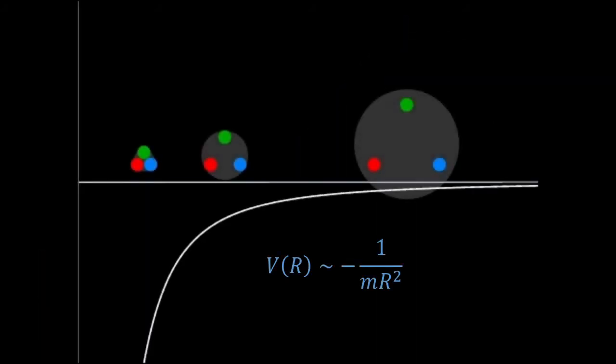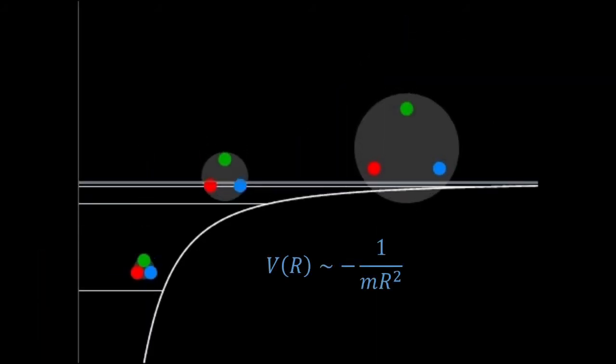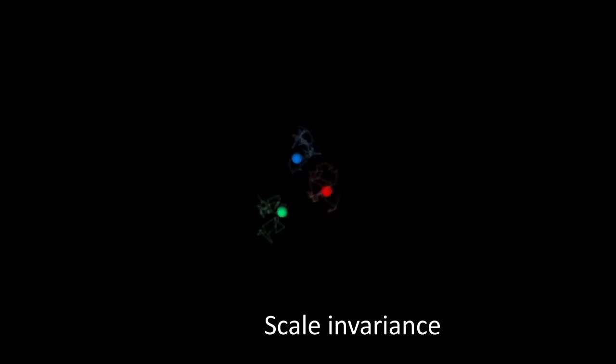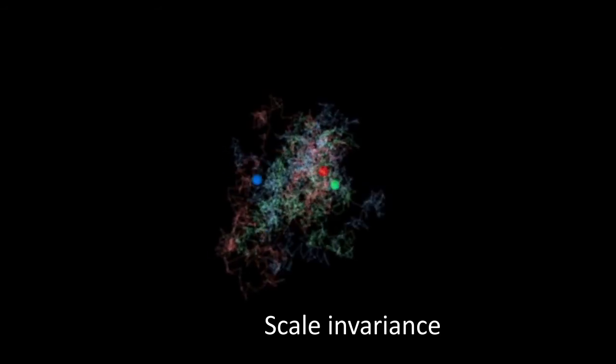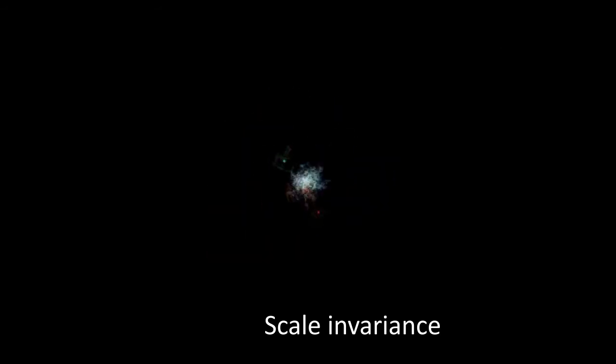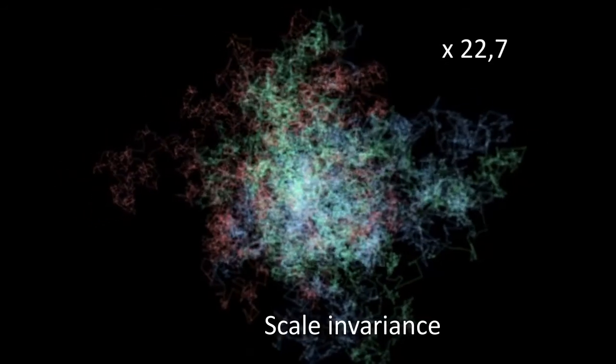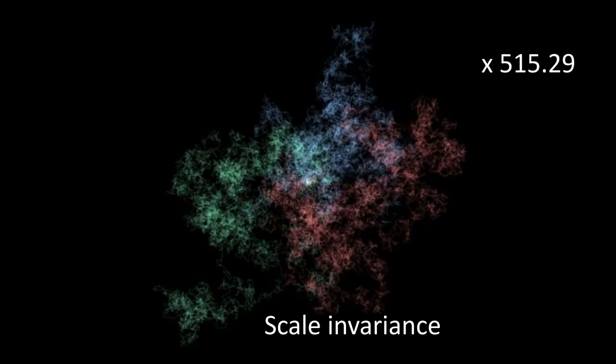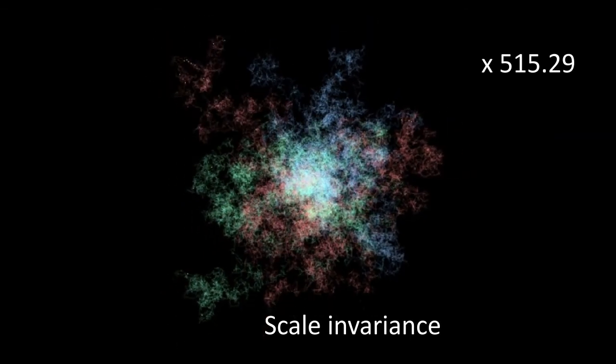The fact that the Yefimov attraction decays as 1 over R squared not only gives a long range, but also makes the system scale invariant. If the three particles are bound by the Yefimov attraction, they can be excited to another state which is 22.7 times larger, and to another one which is 22.7 squared times larger, and so on.